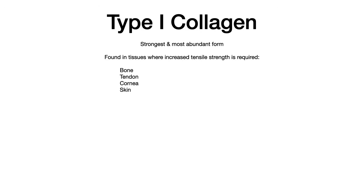Type 1 collagen is the strongest and most abundant form of collagen in the body. It's typically found in tissues where increased tensile strength is required. Those tissues would be bones, tendons, the cornea, and skin. In these tissues, you need increased tensile strength because of what those tissues actually do on a physiologic level.